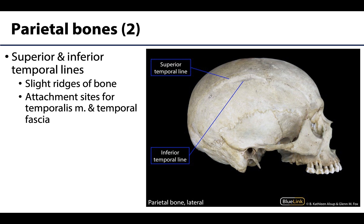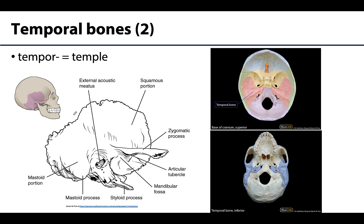Two of the more prominent features on the parietal bones are the superior and inferior temporal lines — slight ridges of bone, not as prominent as other bony processes. These are attachment sites: the superior temporal line for the temporal fascia, and the inferior for the temporalis muscle. If you put your hands on the side of your head behind your orbit and clench your jaw, you can feel the temporalis muscle. It attaches up here and distally on the mandible, as it's a muscle of mastication.